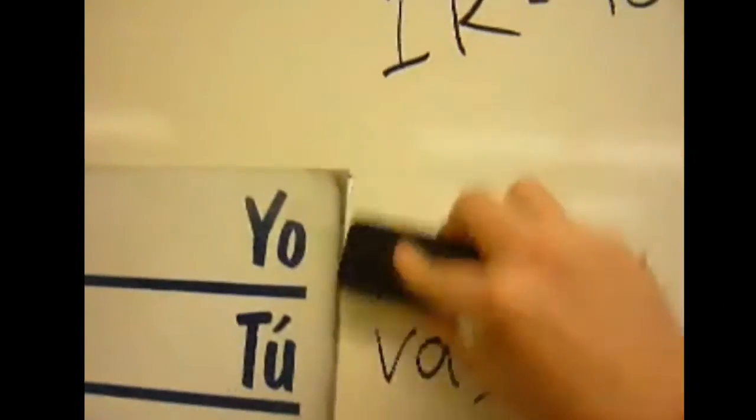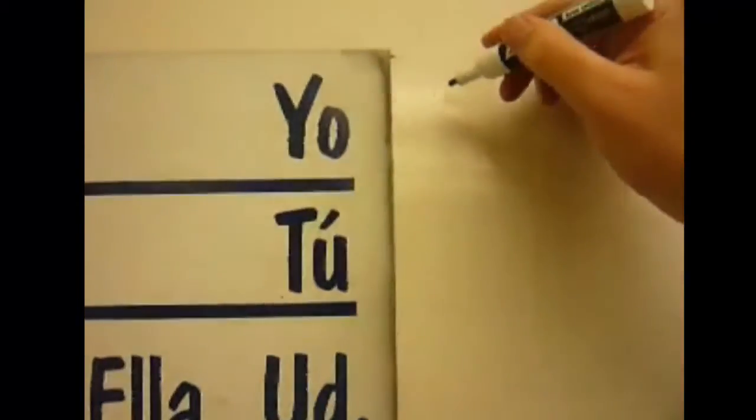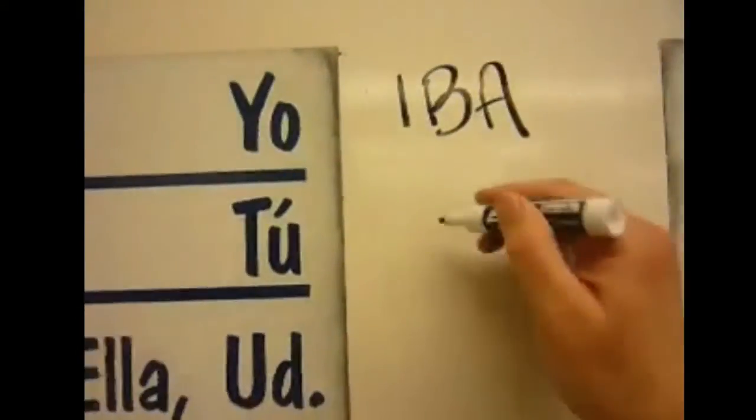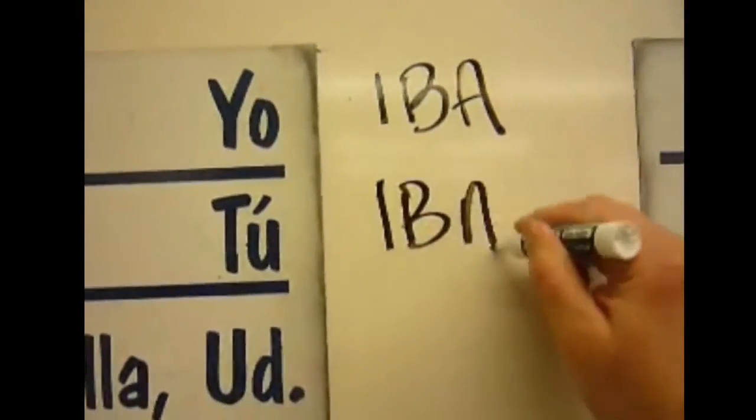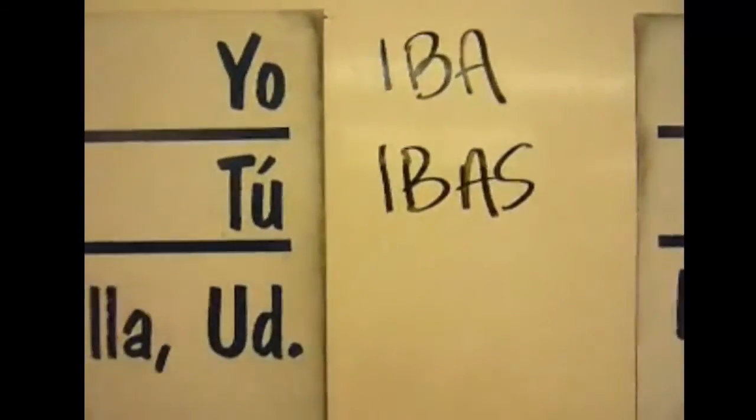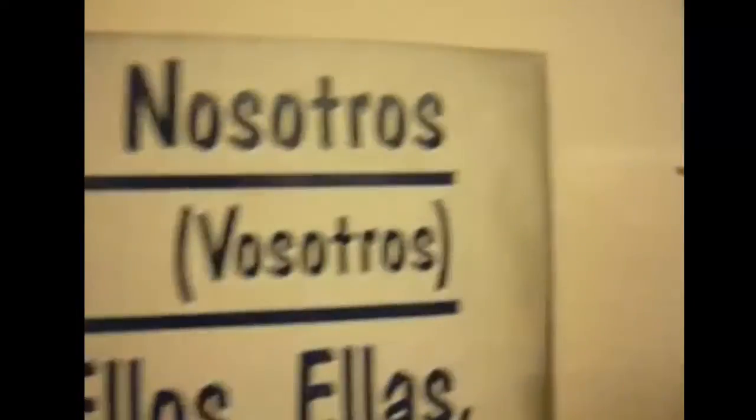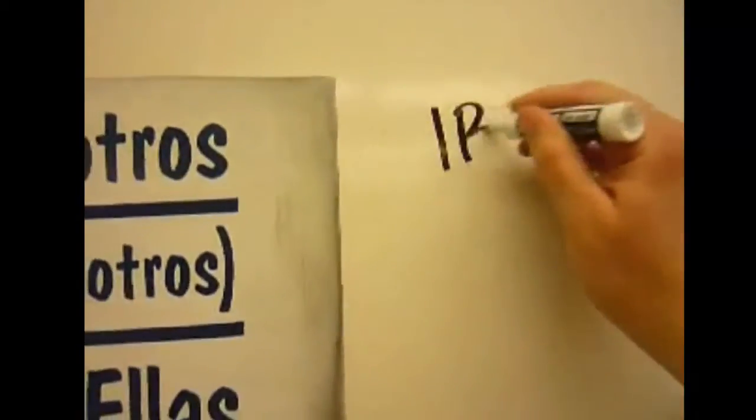Now let's get rid of these. Let's go into the imperfect, again imperfect actions that repeated in the past or were going on when something else happened. Yo iba, iba, tu ibas, el, ella, usted iba, used to go, was going, nosotros íbamos, íbamos.